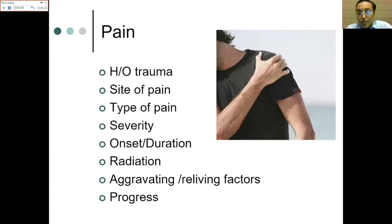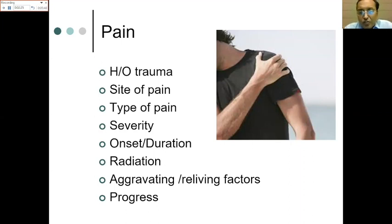Onset and duration of pain are important — if after trauma, it is traumatic pathology; if gradual and insidious with long duration, we look at rotator cuff, frozen shoulder, or rotator pathology. Pain at night suggests rotator cuff or osteonecrosis. If there is radiation, we need to look at the neck and neurological disorders which could cause nerve-related issues.